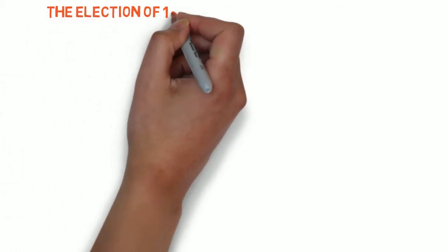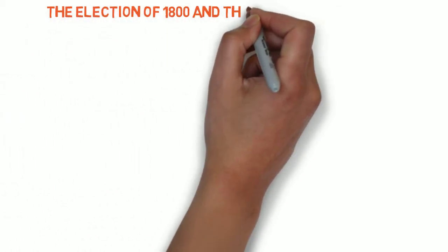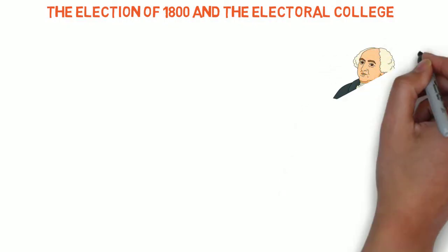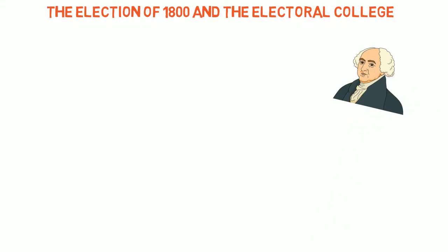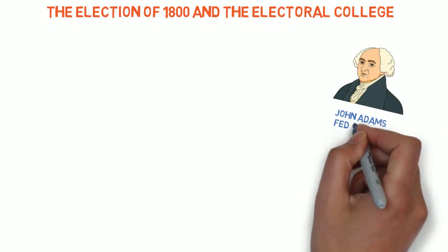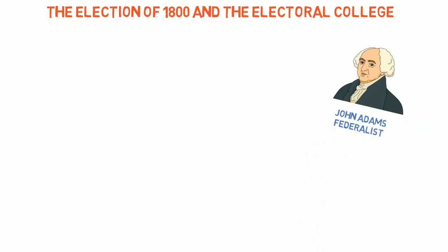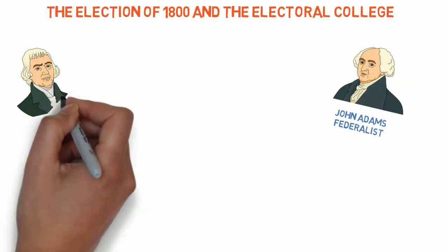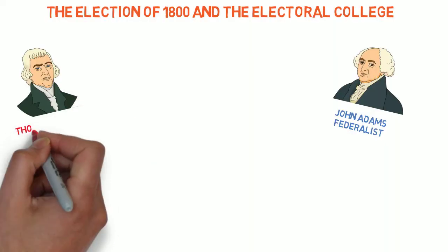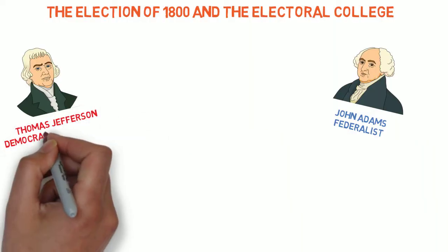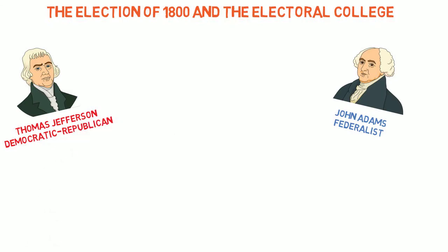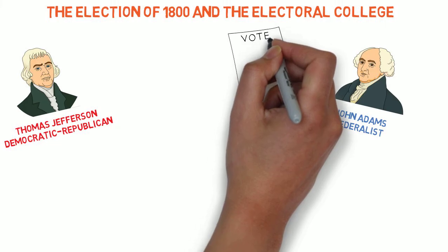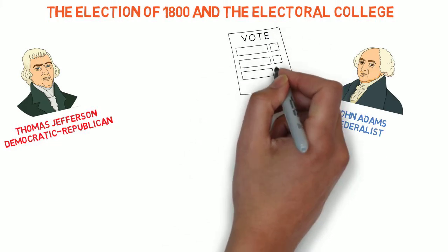Hello U.S. History. The election of 1800 was an important turning point in American history. Federalist John Adams hoped to win re-election, but he faced an uphill battle due to the growing unpopularity of the Federalist Party. The Democratic-Republican candidate Thomas Jefferson campaigned against growing federal power, new taxes, the National Bank, and the Alien and Sedition Acts, all of which were elements of the Federalist Party.